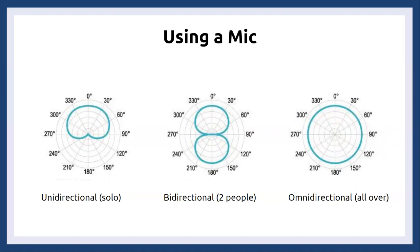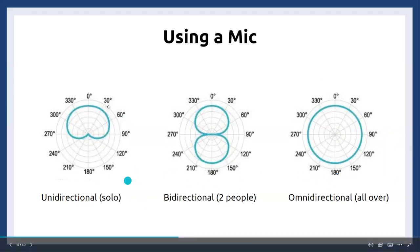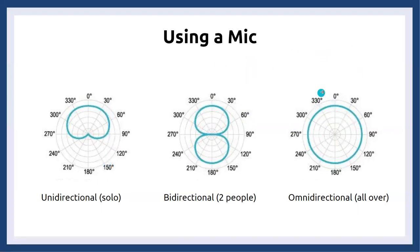In most cases, each person in your podcast will have their own microphone, and these are typically going to be unidirectional. However, that also requires a soundboard and can get much more complex in terms of setup. So we've included the Blue Yeti mic because it has settings to change the sound-capturing direction — you can set it as unidirectional, bidirectional, or omnidirectional. Three for the price of one.